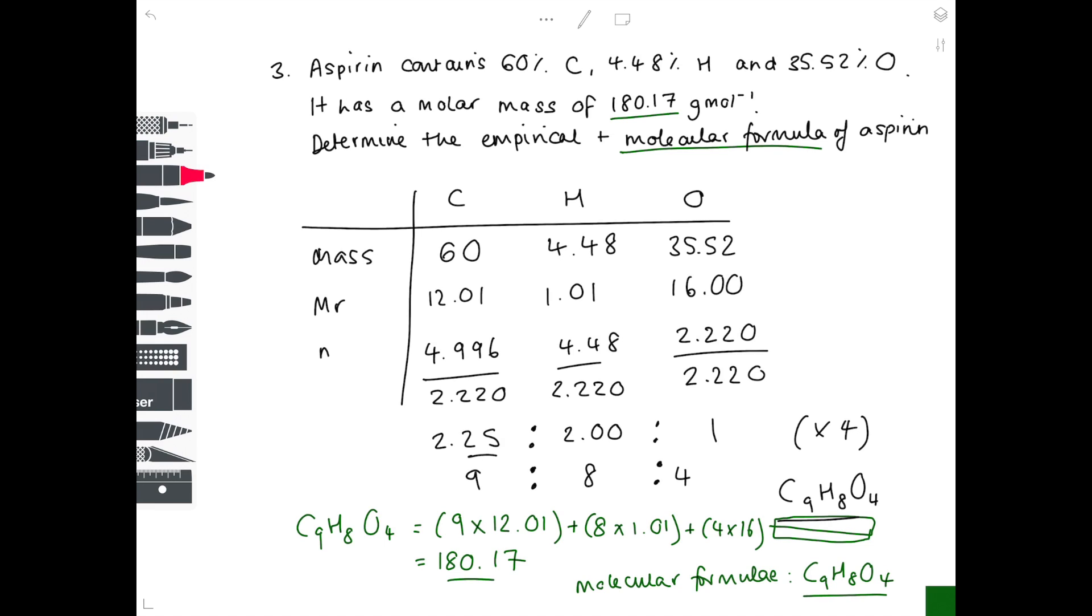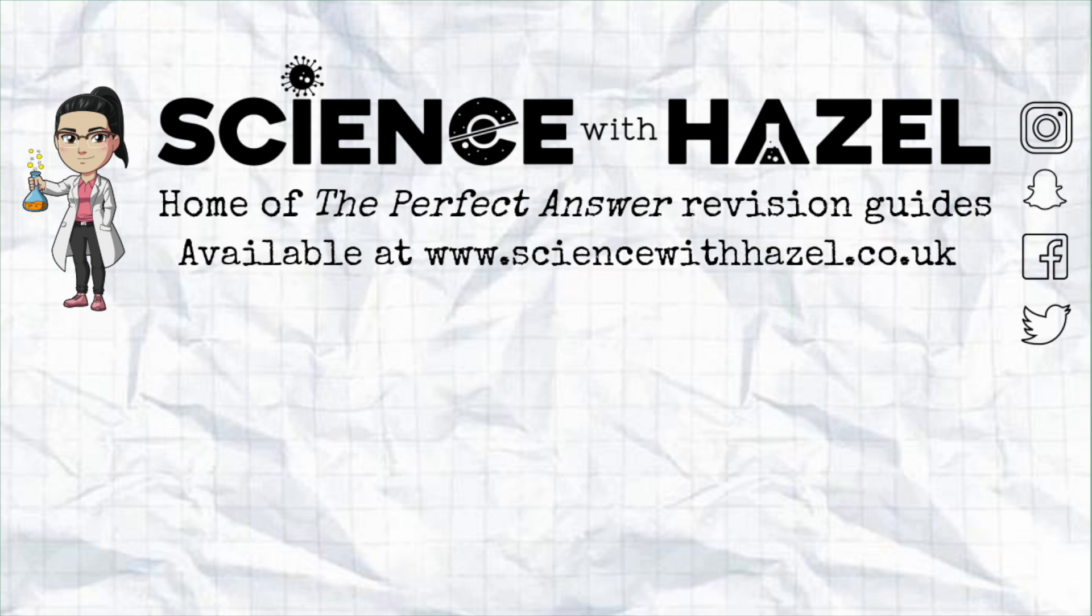Do notice, let's say for argument's sake, that the molar mass had said 360. Well, obviously when you compared your mass that you calculated, it would have been half that given in the question. So your molecular formula this time would just be 2 times everything. So it would be C18H16O8.